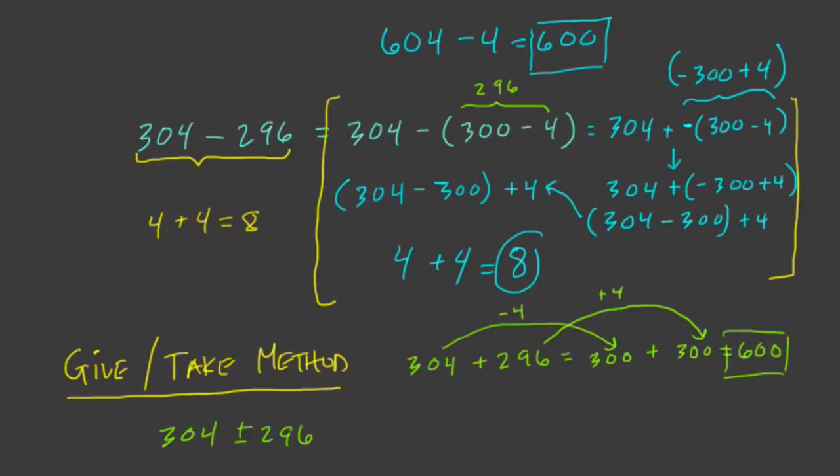So this method says look at the numbers you've got, add some and take some away from the other to get friendly numbers, and then add those numbers together for your answer. This doesn't always work so easily, but in this case it works so wonderfully because 304 and 296 are the same distance from 300.